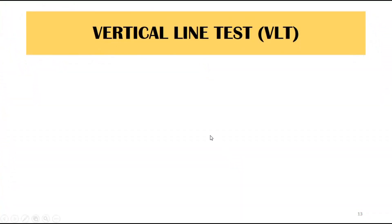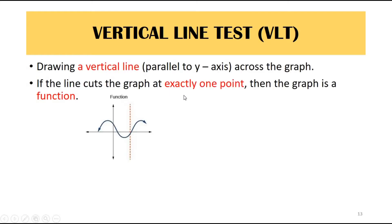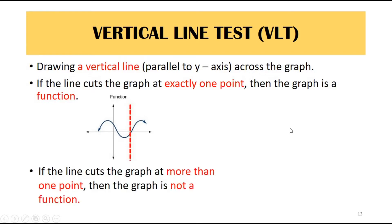Graphically, we can use the vertical line test to determine a function. By drawing a vertical line parallel to the y-axis across the graph, if the line cuts the graph at exactly one point, then the graph is a function. But if the line cuts the graph at more than one point, then the graph is not a function.